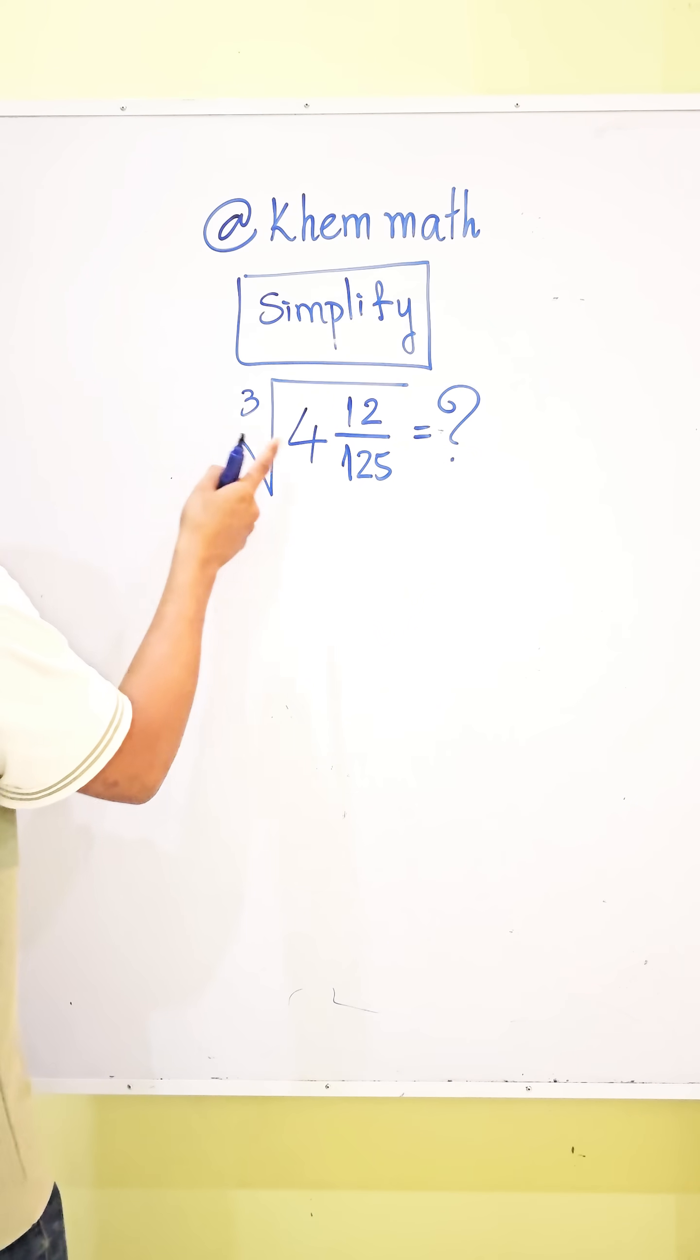So first, we take 4 times 125 and add the result to 12. So it equals cube root of... 4 times 125, we get 500.